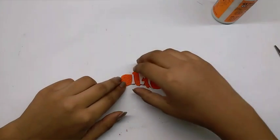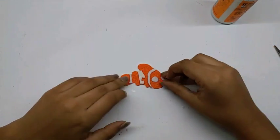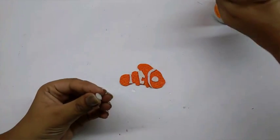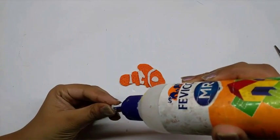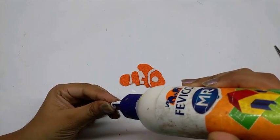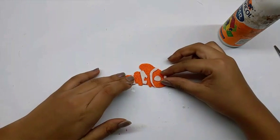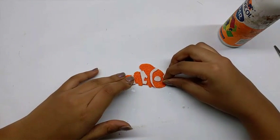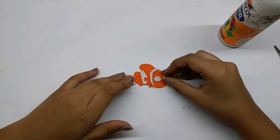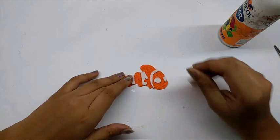I have cut out the white portions of Nemo and now I am going to stick them one by one. So take the eye, apply glue at the back, and just position it right according to the picture that we had and stick it. Like this, stick the rest of the white portions.